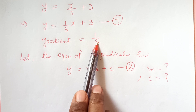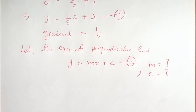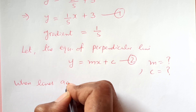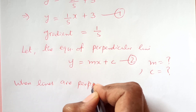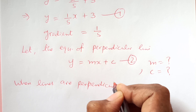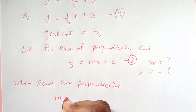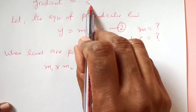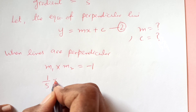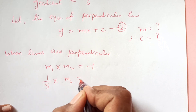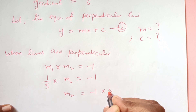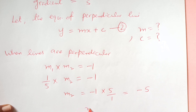From the given line, gradient is 1/5. As covered in the previous video, when lines are perpendicular, the product of their slopes is negative 1. So we can find the gradient of the other line: m2 = -1 ÷ (1/5) = -5. So m2 is negative 5.